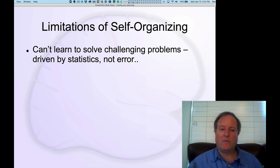To summarize, we can see that self-organizing learning by itself can't learn to solve challenging problems. It's only driven by statistics and correlations, and it's not responsive to the actual mistakes that the network is making and not trying to fix those mistakes.